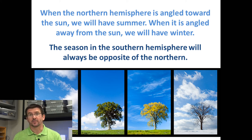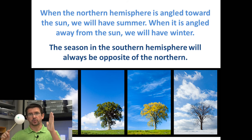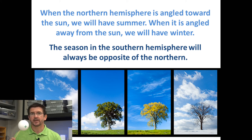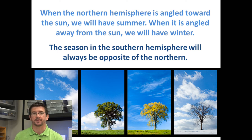Seasons in the Northern Hemisphere versus the Southern Hemisphere will be opposite each other. If the Northern Hemisphere is tilted towards the sun, we're getting more hours of daylight, we're getting warmer weather, we're experiencing summer — that means the Southern Hemisphere is tilted away from the sun, getting fewer hours of daylight, cooler temperatures, and experiencing winter. The season in the Northern Hemisphere will always be opposite of the season in the Southern Hemisphere.